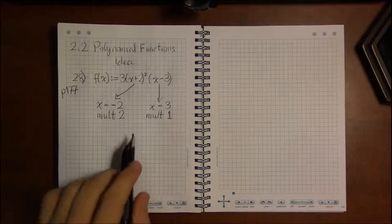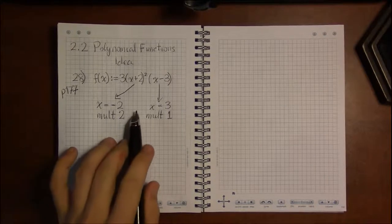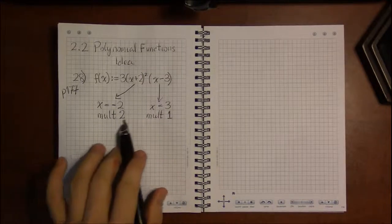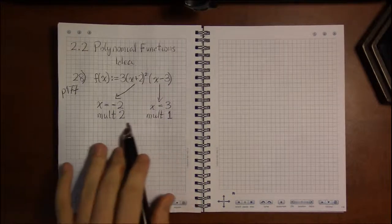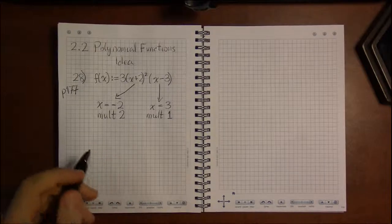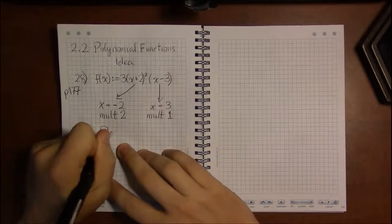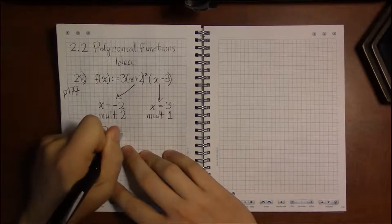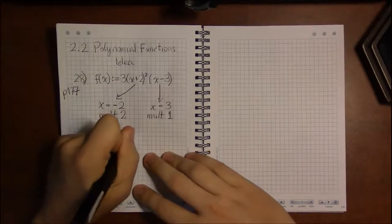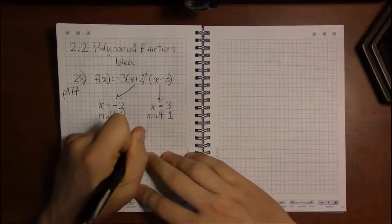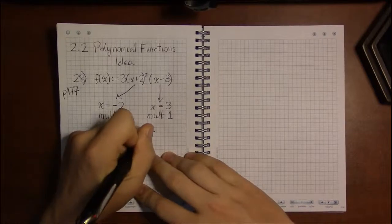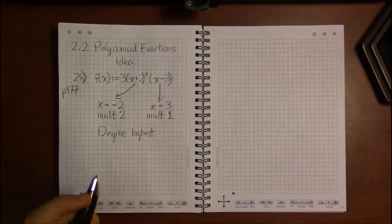Now, the reason I'm reviewing this is because multiplicity ties into something else we talked about. We also talked about the degree of the polynomial, and that was the highest power of x that occurred, but only when you wrote it out in that very special form.